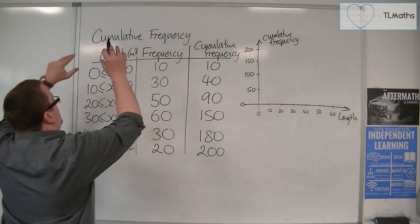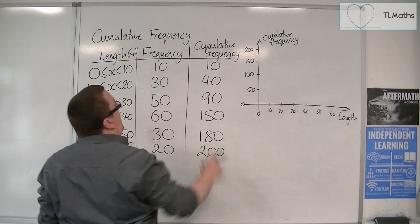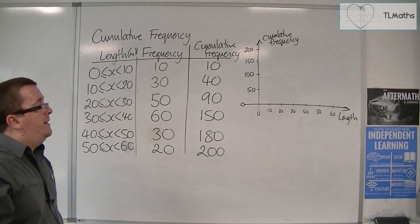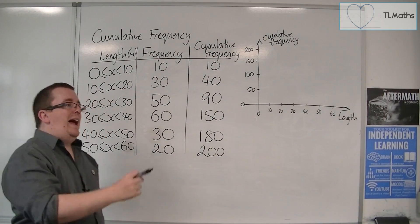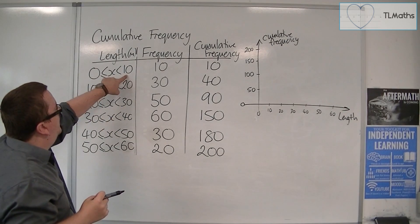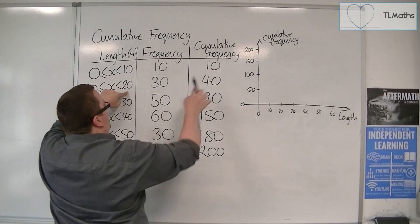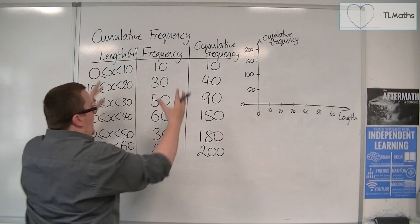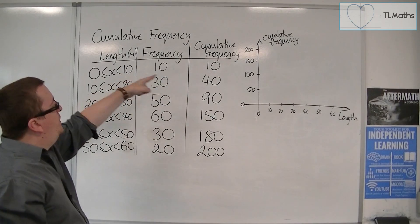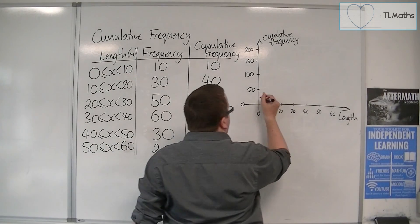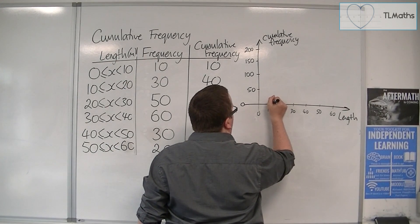So between 0 and 10, we have a cumulative frequency of 10. Now, we put that at the end of the data column. So we're going to plot it as 10, 10, 20, 40, 30, 90, etc. So we're going to start off with 10, 10. So 10, 10 would probably be around about there.